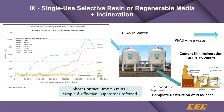Ion exchange is another technology. These typically have a shorter contact time, meaning smaller vessels. The media itself is more expensive than granular activated carbon. Carboxylates — those ending in A — are much more difficult to remove than sulfonates, which typically end in S. Ion exchange may achieve several hundred thousand bed volumes before it has to be regenerated.